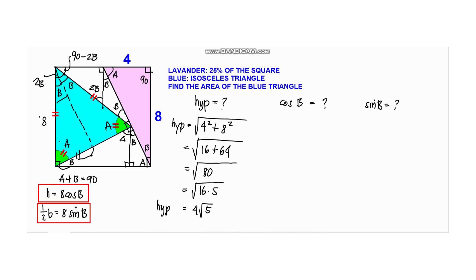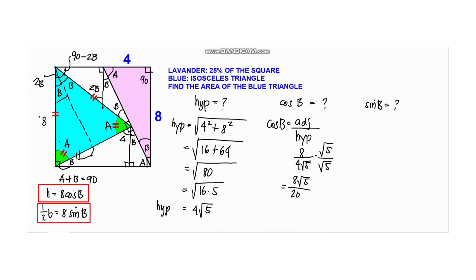For cosine of B, that equals the adjacent side over the hypotenuse. The adjacent side of this angle is 8, all over 4 square root of 5, which is the hypotenuse. If we rationalize, we get 8 square root of 5 over 4 times 5, which is 20. Simplifying by dividing by 4, we get 2 square root of 5 over 5. So cosine of B equals 2 square root of 5 over 5.